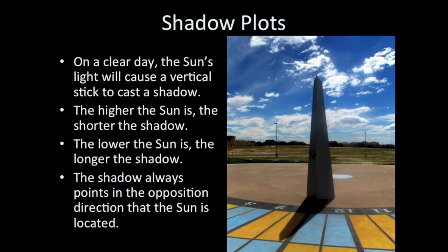Another aspect that can help you understand where the Sun is in the sky is to use the shadows of upright sticks on the surface of the Earth — something people have been doing for thousands of years. You can make shadow plots based on the shadow cast by sunlight on an upright stick. The higher the Sun is, the shorter the shadow. The lower the Sun is, the longer the shadow. The shadow always points in the opposite direction from where the Sun is in the sky — so if the Sun is high in the southern sky, the shadow will point north.